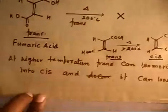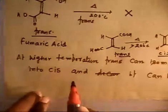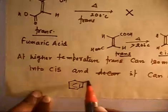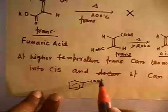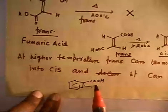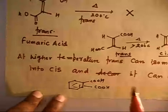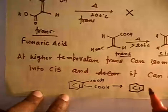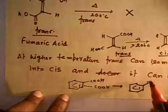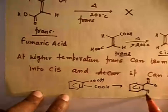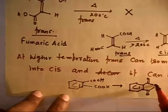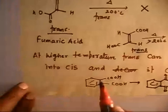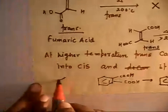We also see something similar with benzene rings. If a benzene molecule has a COOH group at the ortho position — that is, the two adjacent positions — and you heat it, it will form an anhydride. This means the two COOH groups are basically at the ortho position to each other.